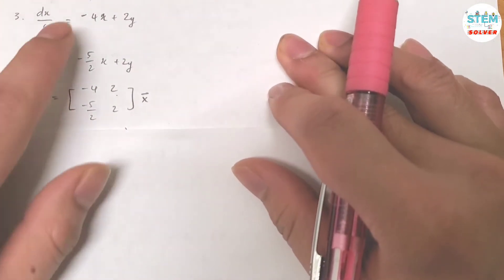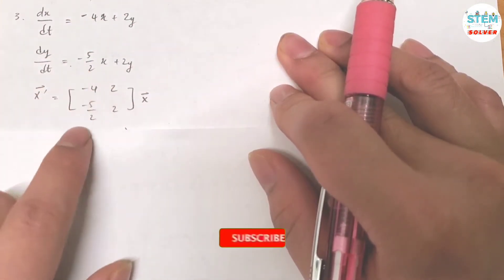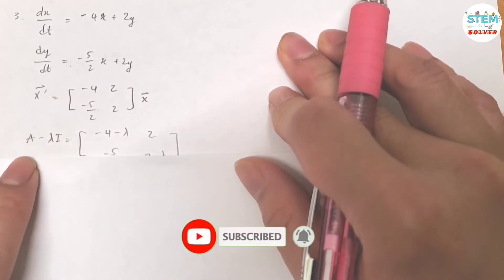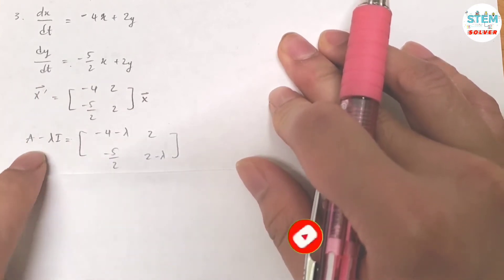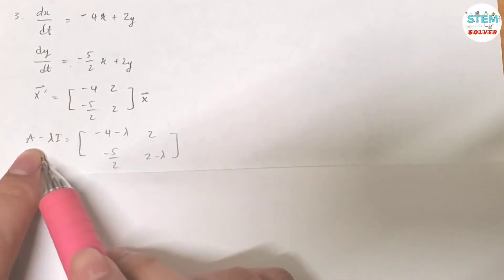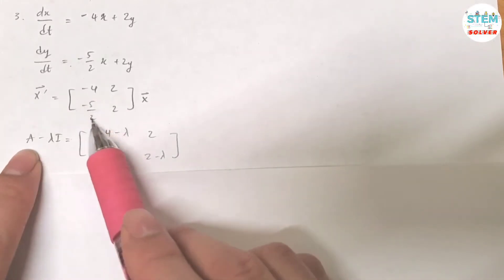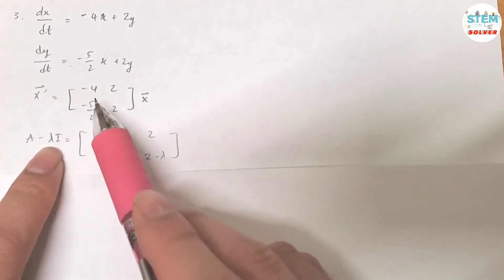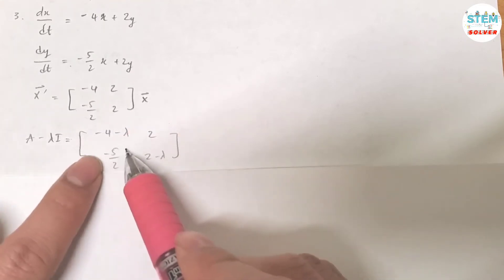So you have negative 4, 2, negative 5 halves, 2. Then you are going to find the determinant. You need to take A minus lambda I. What is A? A is this matrix, and then you minus lambda I. Lambda I is, I is an identity matrix. So you take this matrix, subtract that identity matrix, that gives you this one.